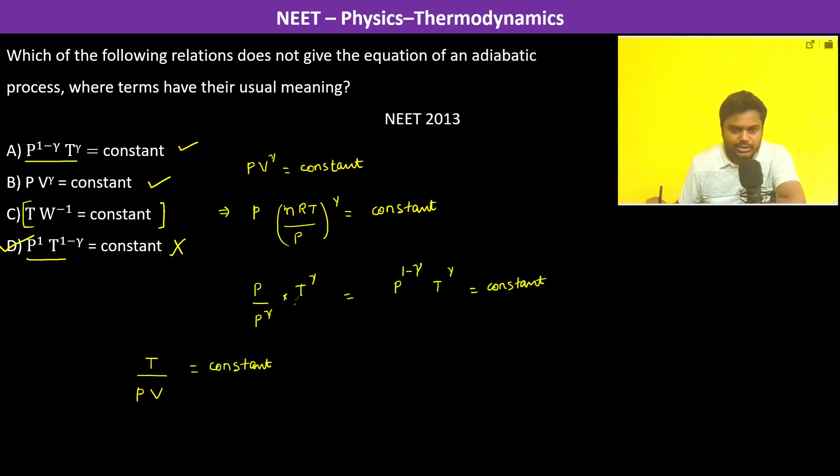Yes, this is going to be constant because PV equals nRT. So therefore T divided by PV equals nRT gone, so this is 1 over nR. Now the number of moles is constant and R is obviously the gas constant, so this has to be constant. Therefore this relationship is also valid.